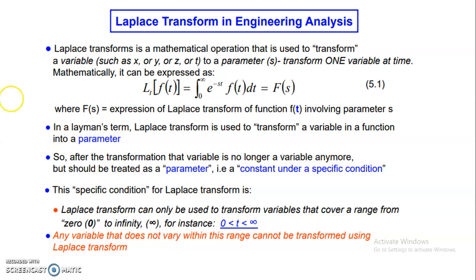Mathematically, it is expressed as shown here. The function f of s is the expression of the Laplace transform of the function f of t, involving the parameter s. In layman's terms, the Laplace transform is used to transform a variable in a function into a parameter. After the transformation, that variable is no longer a variable but should be treated as a parameter with a constant value under the specific condition that the variable covers the range from 0 to infinity.